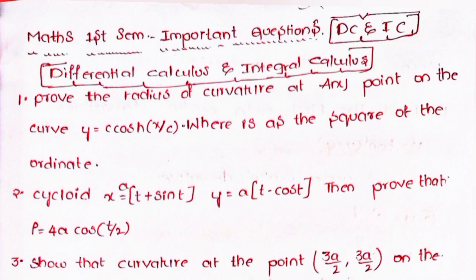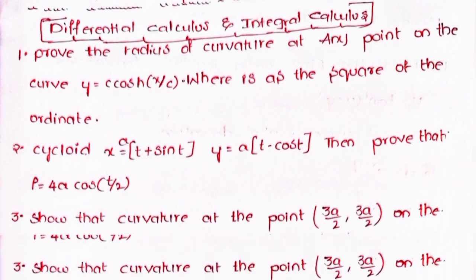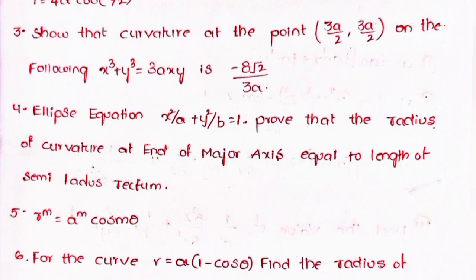Second, for the cycloid x = a(t + sin t), y = a(t − cos t), prove that ρ = 4a·cos(t/2). Third, show that the curvature at the point (3a/2, 3a/2) on the curve x³ + y³ = 3axy is −8√2 / 3a.